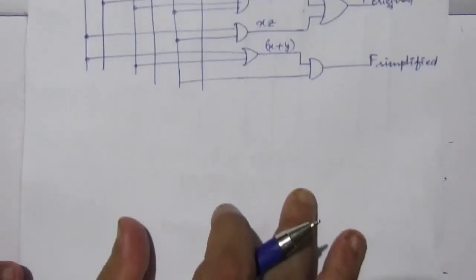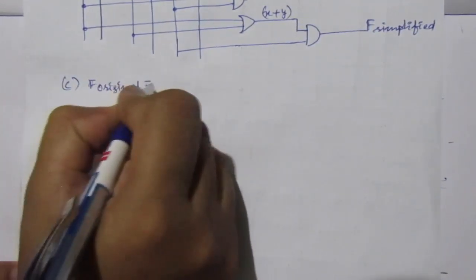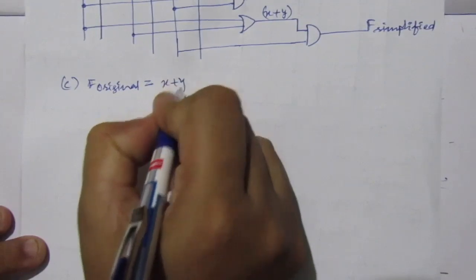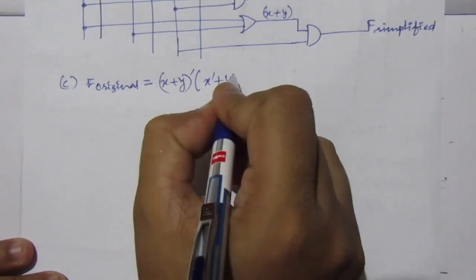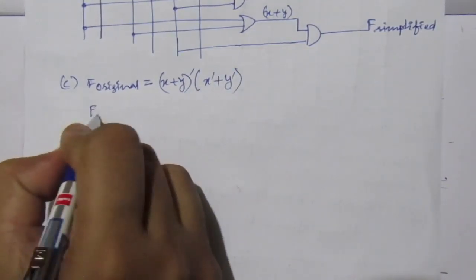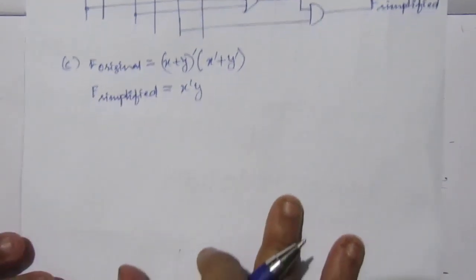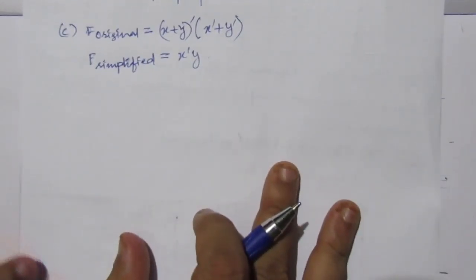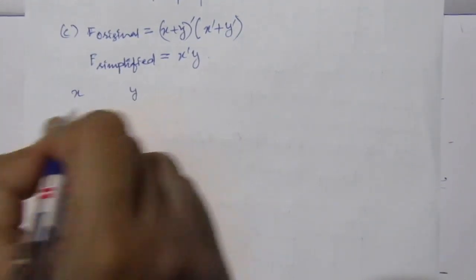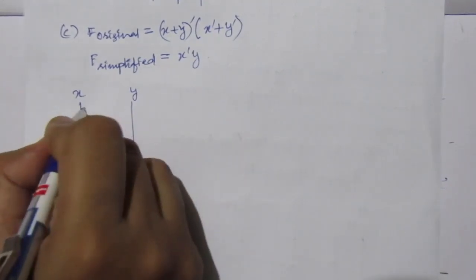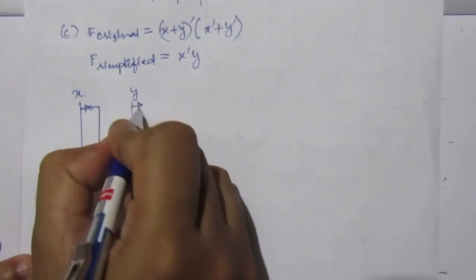Now for part C: F original equals (X + Y)̅ · (X̅ + Ȳ), and F simplified equals X̅Ȳ. We have two inputs X and Y, so draw two lines X and Y, and use inverters on each to get X̅ and Ȳ.